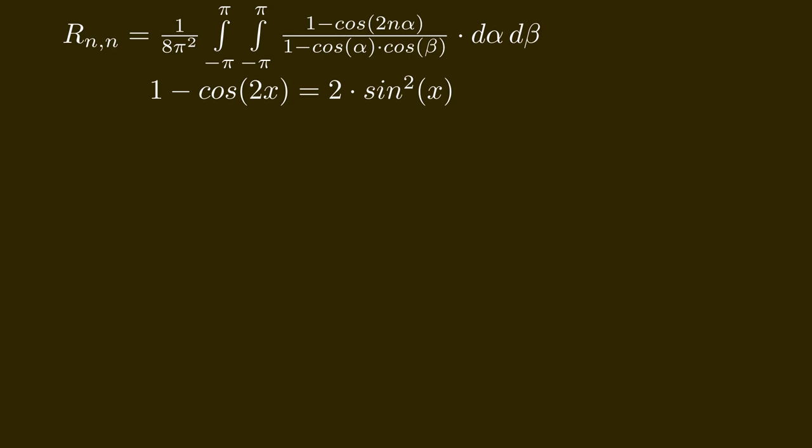Now back to our original integral. Before we do one more simple trigonometric substitution. 1 minus cos(2x) is 2sin²(x). Let's apply this in our initial integral. Note the factor of two reduced our denominator from 8π² to 4π² again. Now let's apply our B integral.